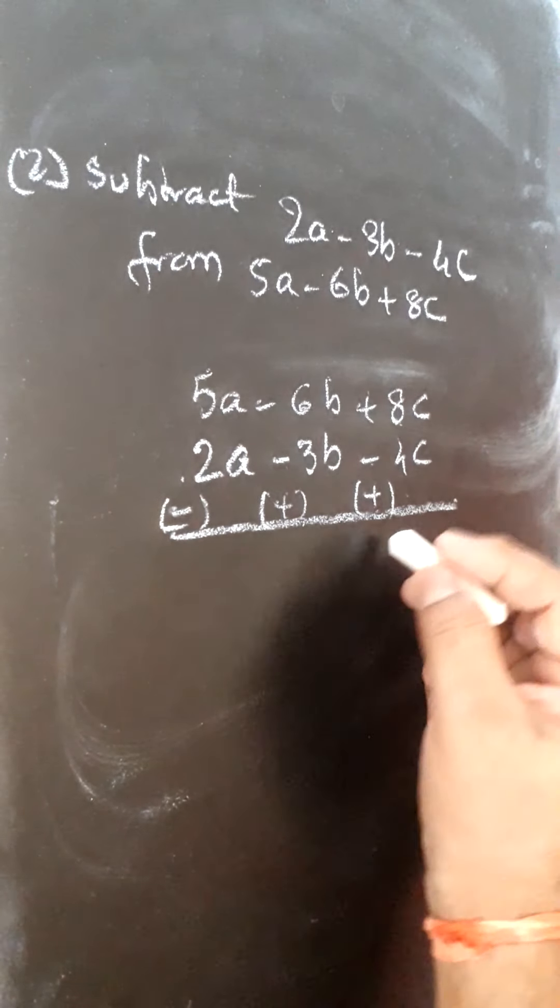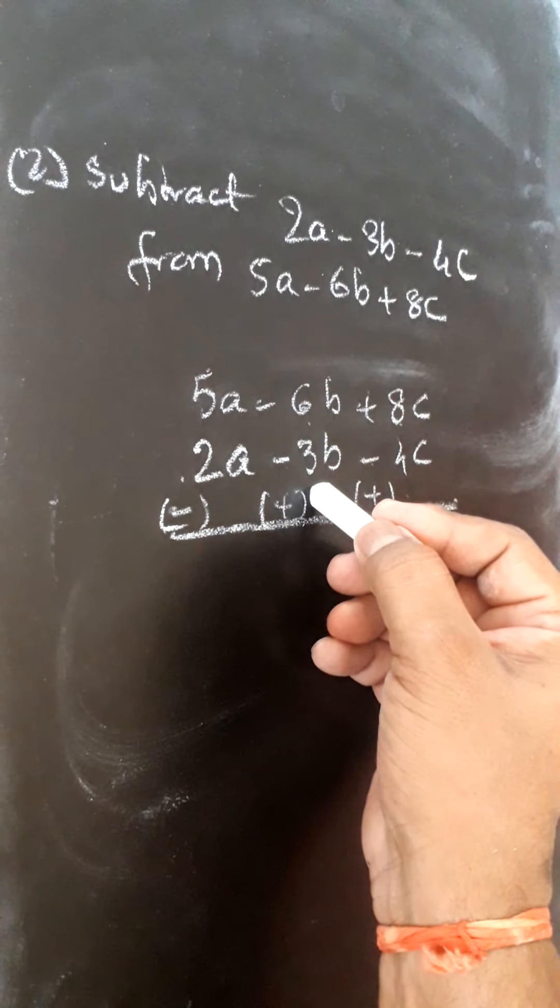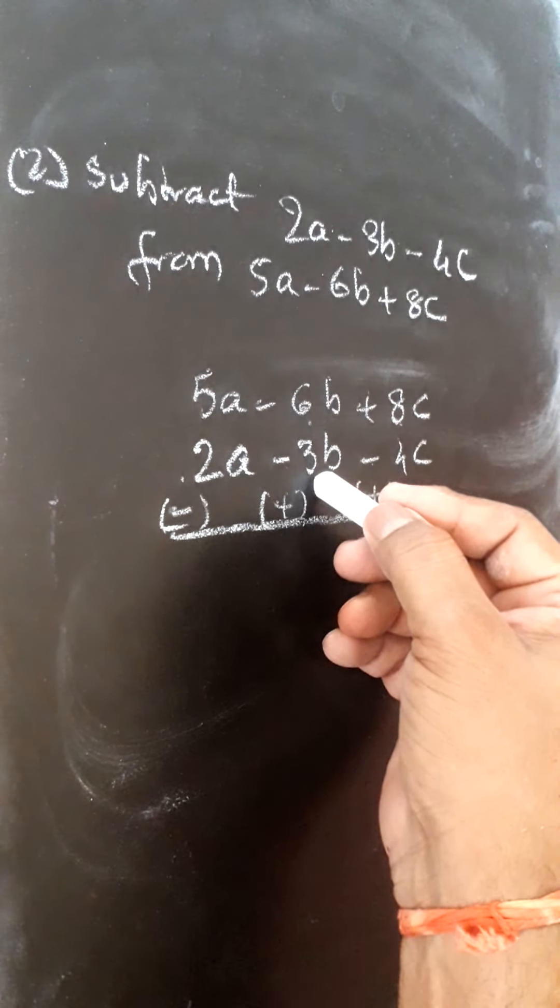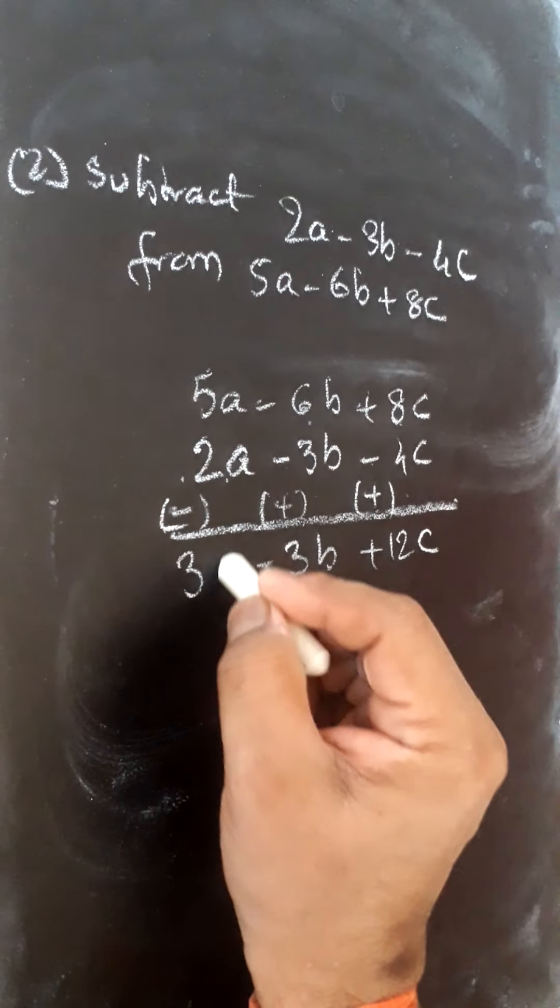Now plus 8 plus 4, 12. Minus 6b plus 3b will become minus 3b. 5a minus 2a will become 3a.